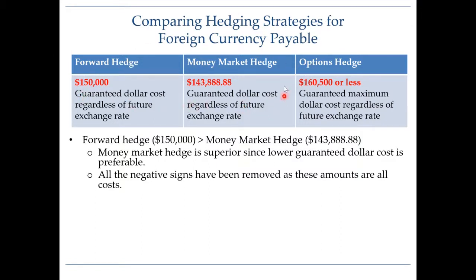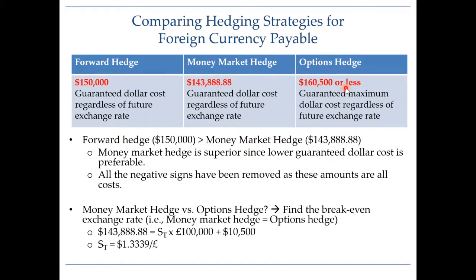Next, we compare money market hedge against options hedge. We can compute the breakeven exchange rate between these two hedging strategies by setting the dollar cost from money market hedge equal to the dollar cost from options hedge. When we solve for that, we get a future spot rate of $1.3339 as our breakeven exchange rate.